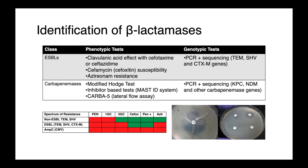For the carbapenemases, there's some older tests — either the modified Hodge test. Here what we have is a lawn of a highly susceptible organism that will easily be killed by a drug like meropenem. And then in towards that disc, we put streaks of our organisms that we suspect is producing a carbapenemase.